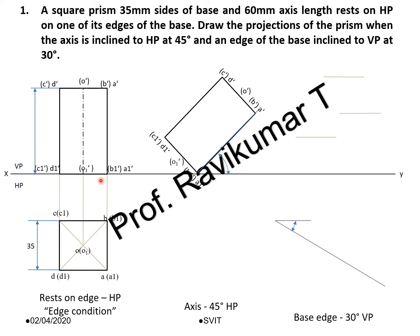What is the second position? Axis inclined to 45 degrees to HP. This is the axis, inclined to 45 degrees to HP. To construct this, I have to consider a base angle for manual construction. In computer drawing, I will take this point, place it here, and rotate it to 45 degrees. This is the second position — the naming is completely rotated.